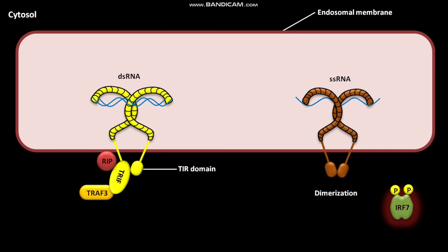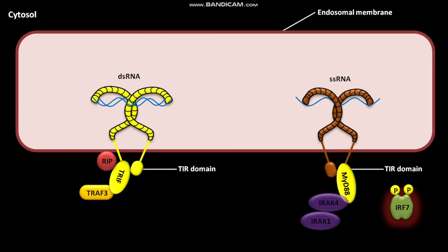Each TLR7 has a TIR domain. The cytosolic adapter protein MYD88 binds the TIR domain of TLR7. The bound MYD88 protein recruits both IRAK4 and IRAK1.